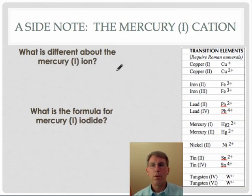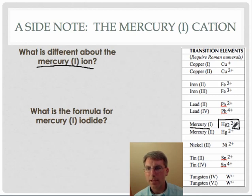I've got one more note I want to make before I set you off on your own. The mercury one ion is slightly different than all the other ions in here. And if you take a look, mercury one, right here, mercury one, exists this way. And it's different because it's diatomic.